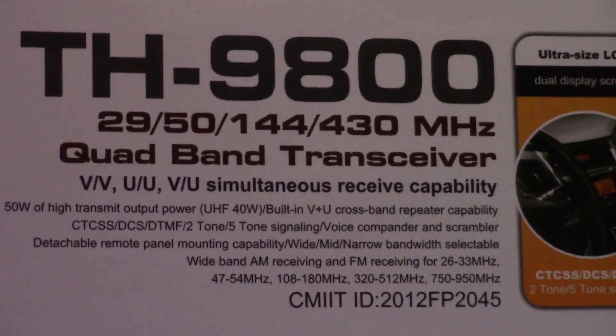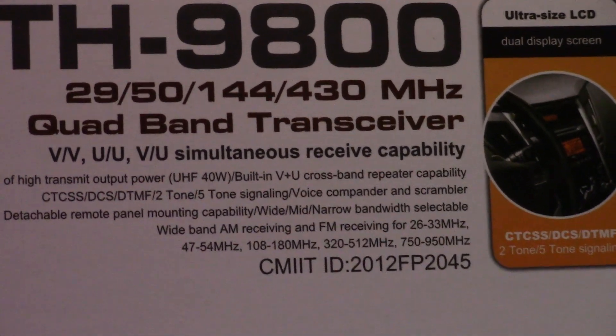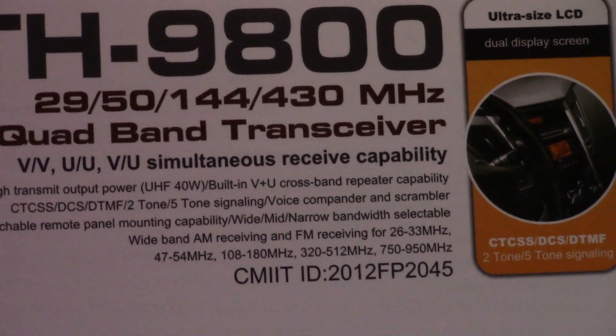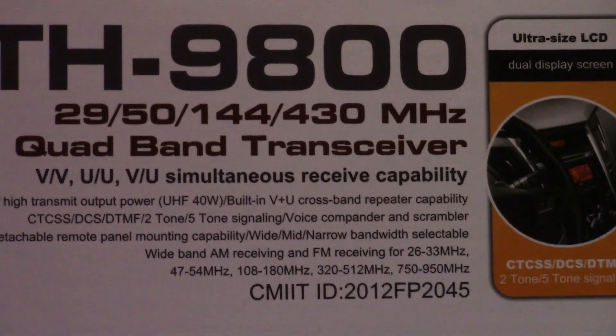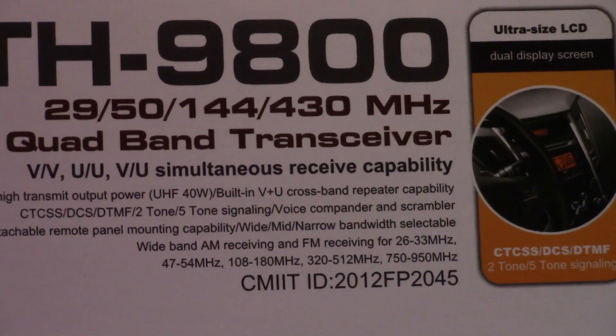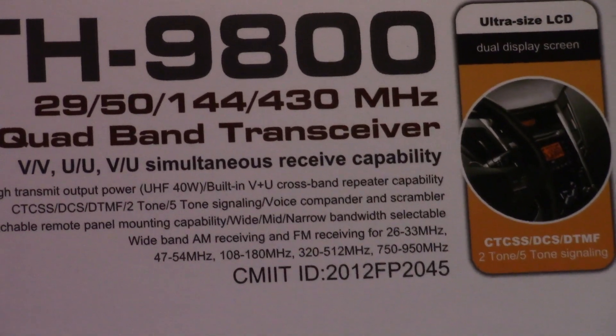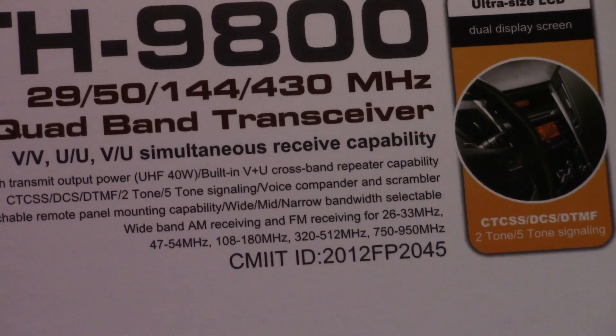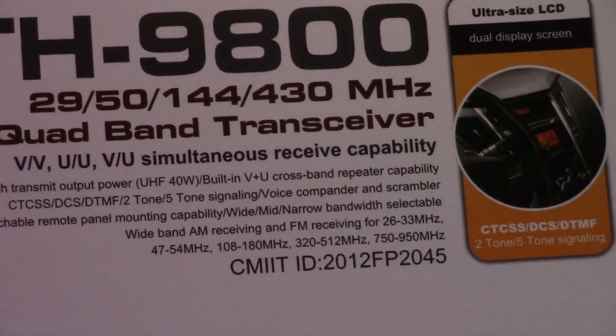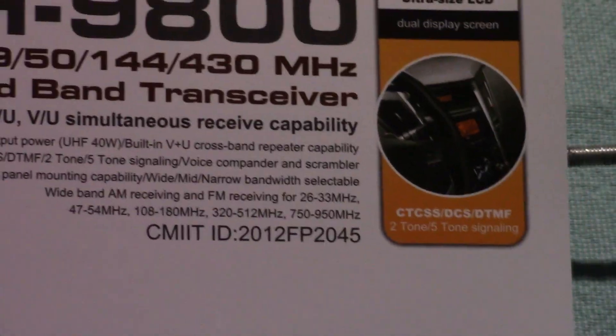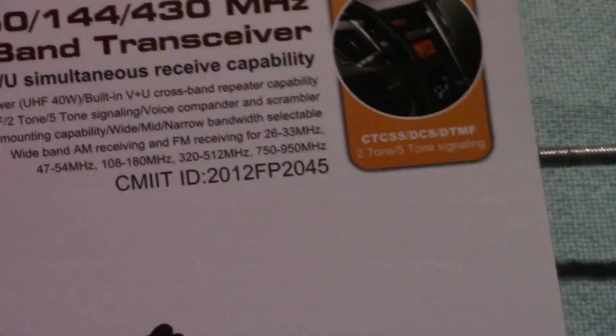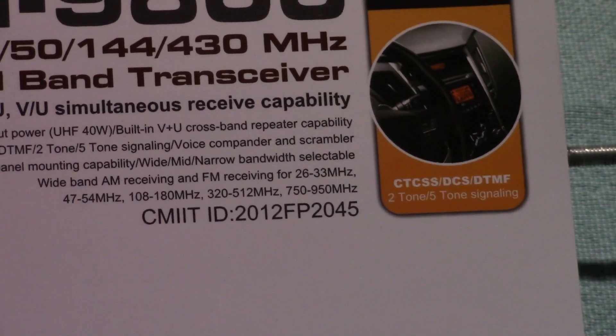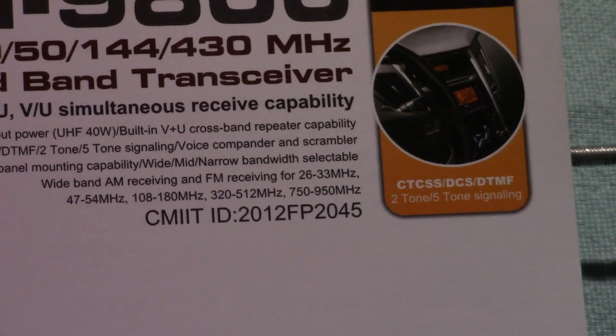TYT TH9800. You see all the frequencies there. Quad band transceiver. I especially wanted a radio that had 6 meters in it. Looking online, I couldn't find really any 6 meter radios that were in a price range that I thought was reasonable. Most of the ones that you did find were older used models. I came across this. This is actually, looks to me like a clone of the Yaesu 8900. I've got this radio and I'm going through it now, trying to figure it all out.